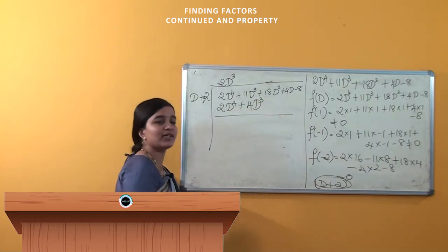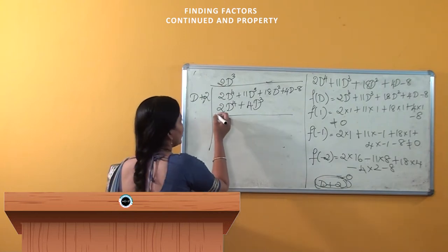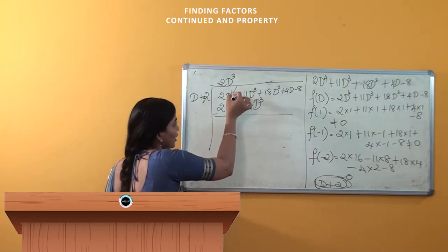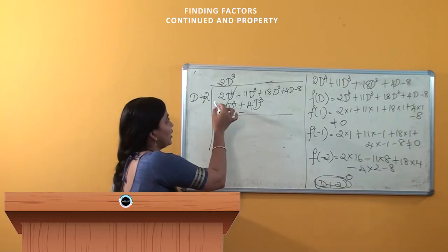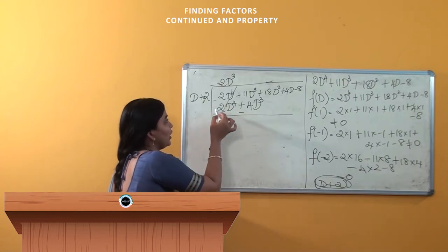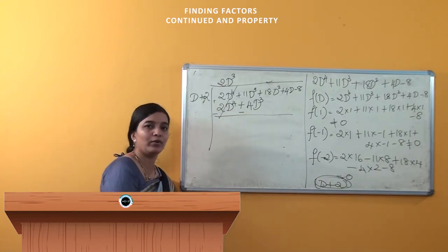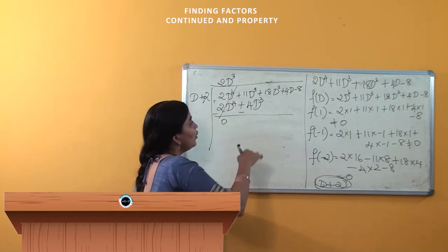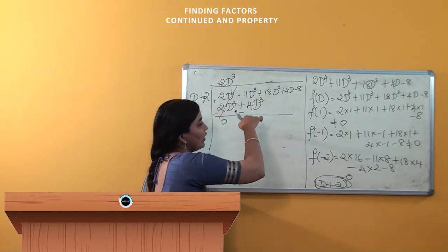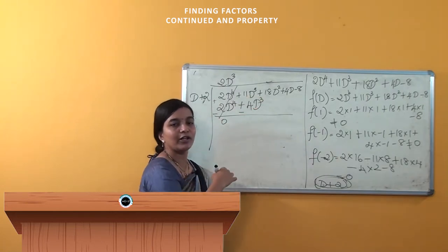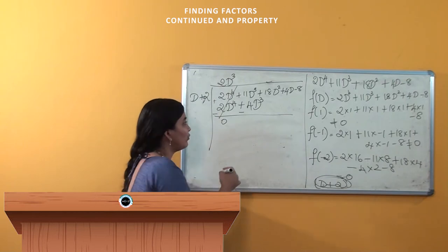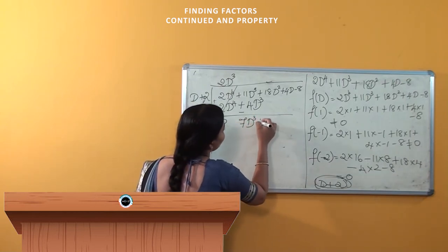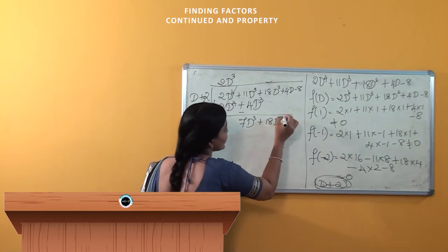Here we have to change the signs, so this becomes negative, negative. This gets cancelled because here it is positive and here it is negative, so it gets cancelled — the value is 0. Here 11 minus 4 is 7, giving us 7d³ + 18d².